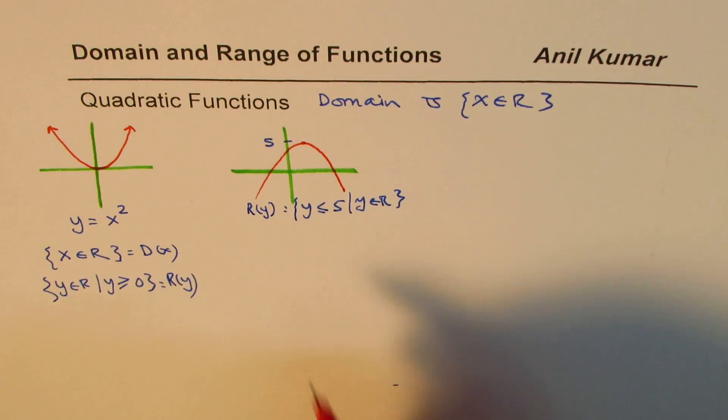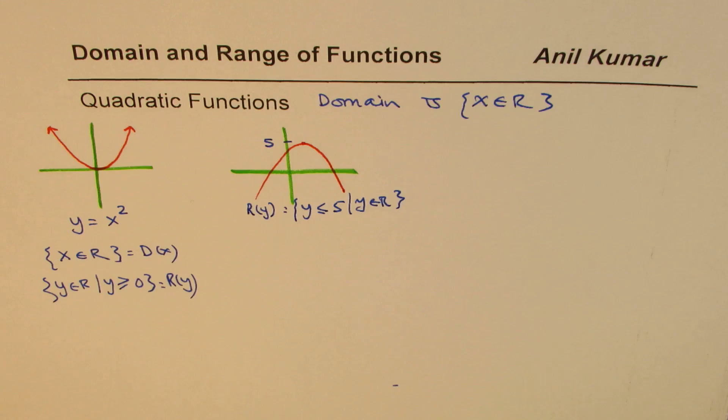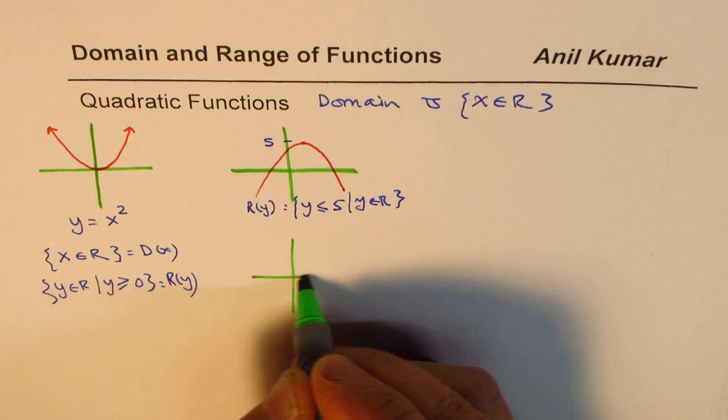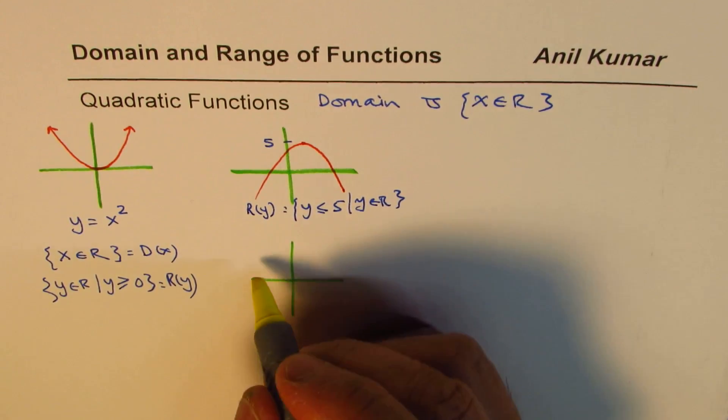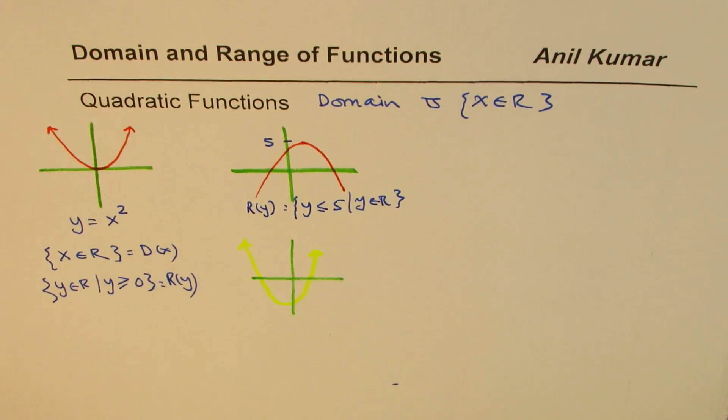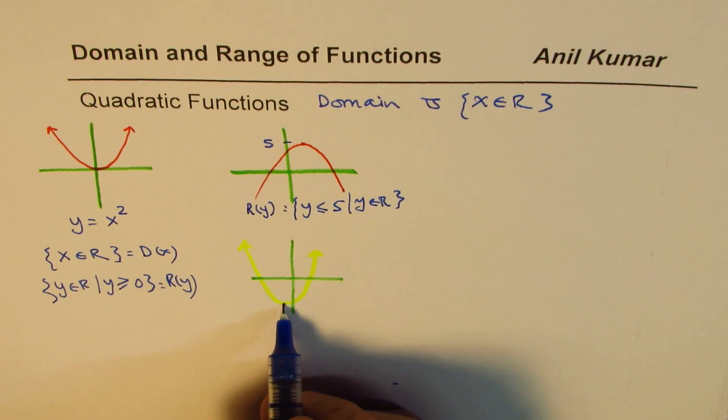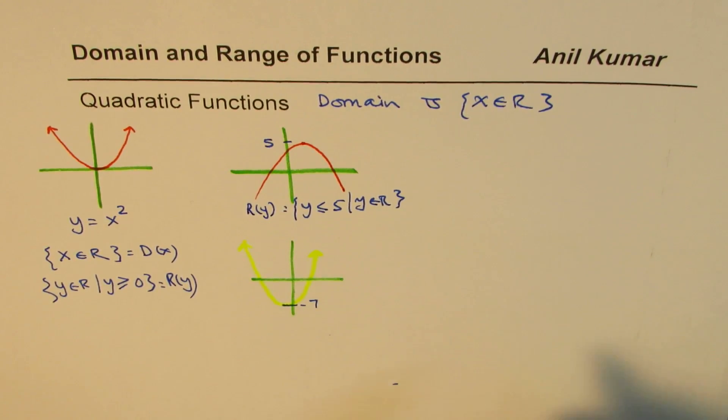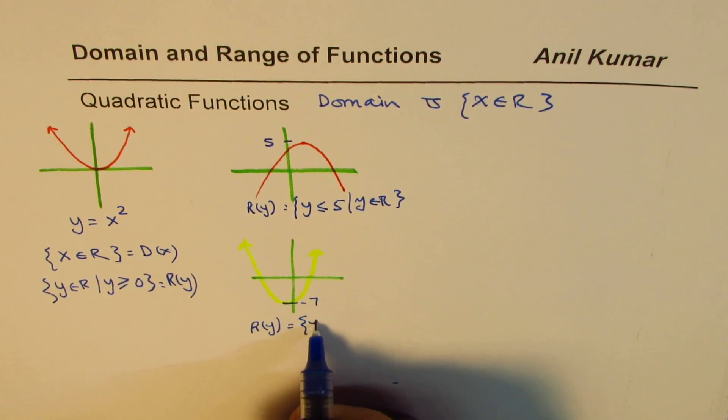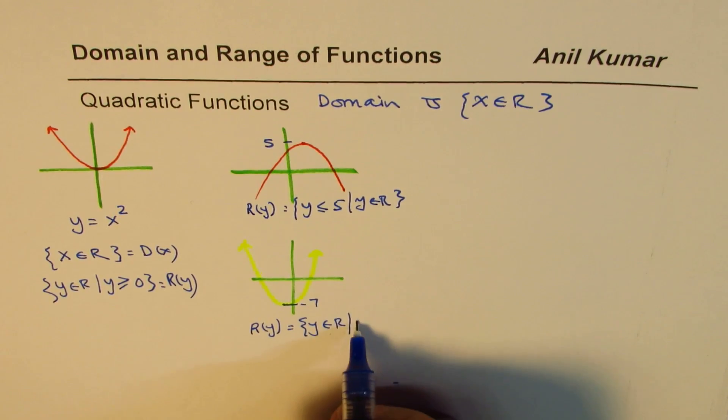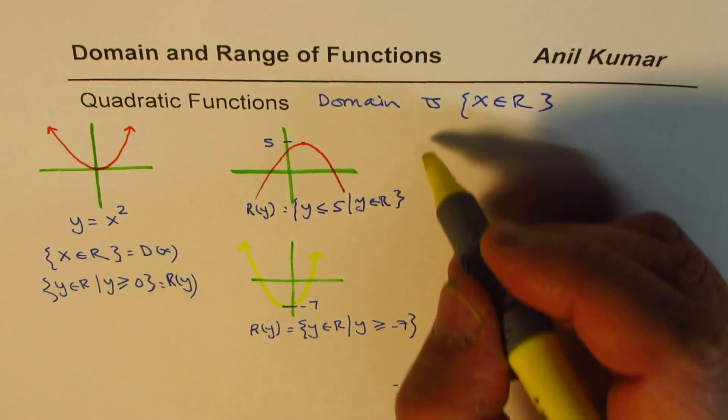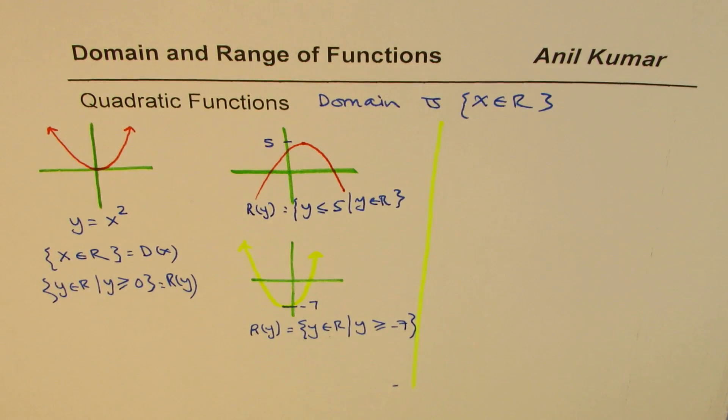How about if I sketch the graph towards the other side, that is opening upwards, but move a bit down? So I could have a graph which could be kind of like this. Now, if this point here is the bottom most point at minus 7, then we say range for this function is y belongs to real numbers, where y is greater than or equal to minus 7. So from the graph, it is very easy to write down domain and range.